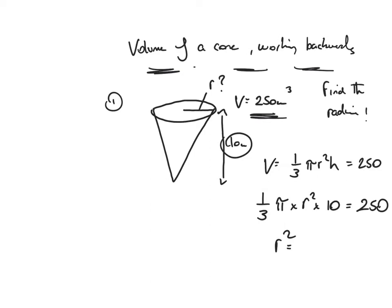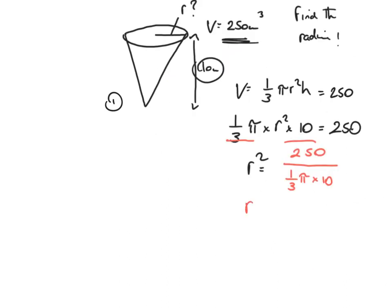I can gather this all together. So I bring the one third times pi times 10 down and divide, giving r squared equals 250 over one third pi times 10. I then take the square root — that's the square root of 250 divided by one third pi times 10. Entering that carefully into the calculator, to one decimal place, that gives me 4.9 centimetres for the radius of the cone.